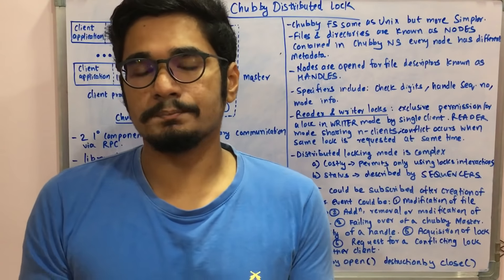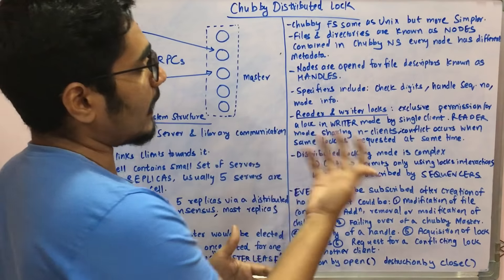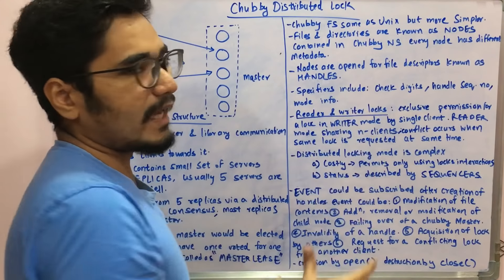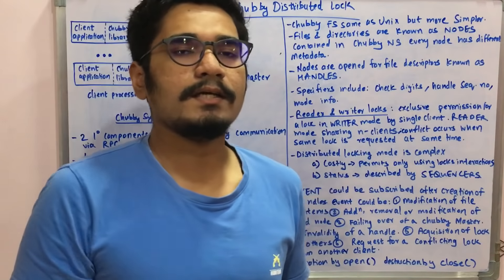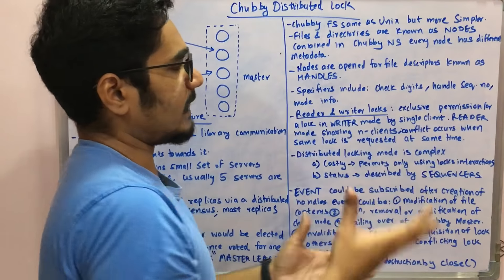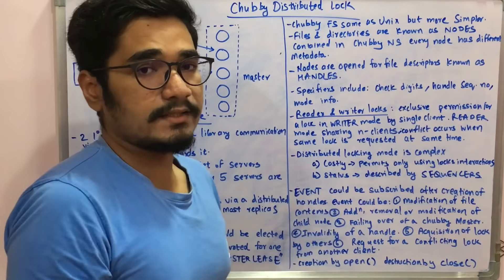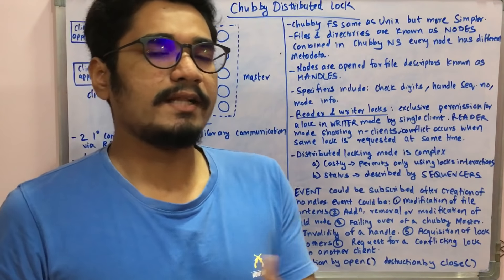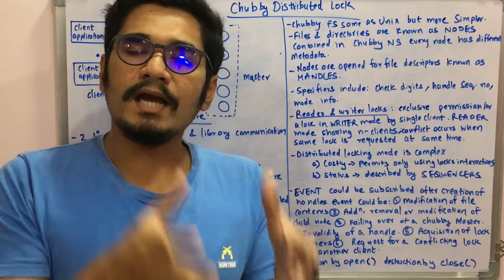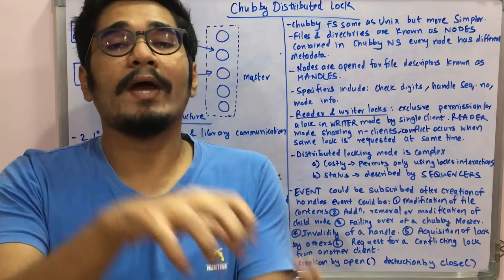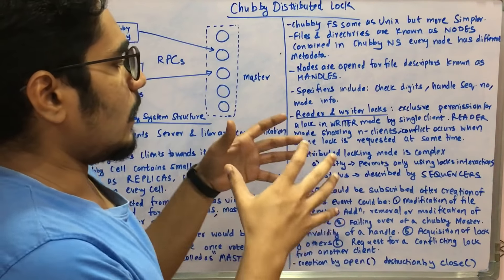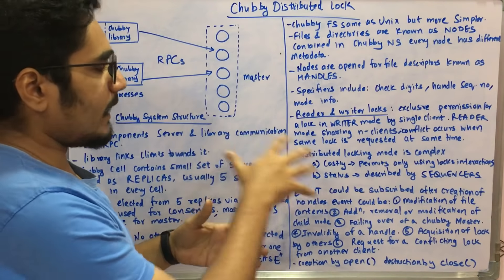There are reader and writer locks in Chubby. Exclusive permission is allowed for writer mode — the writer lock can be held by a single client, so at one single point in time only one client can write while the rest can read. In reader mode, sharing among multiple clients is allowed. A conflict occurs when the same lock is requested at the same time by another client — for example, if one client is writing and another tries to acquire that lock, a conflict occurs. We make sure that deadlock doesn't happen in this setup.